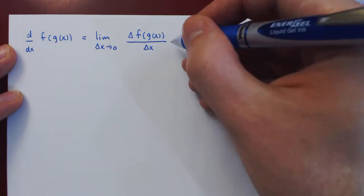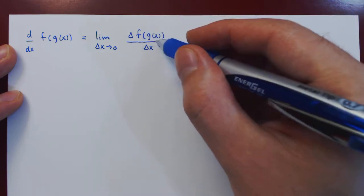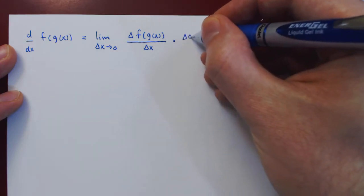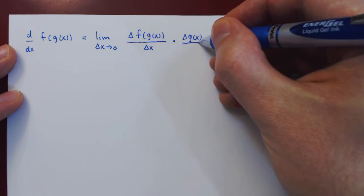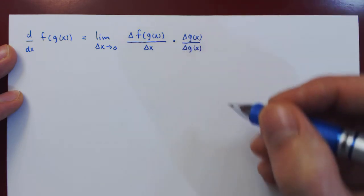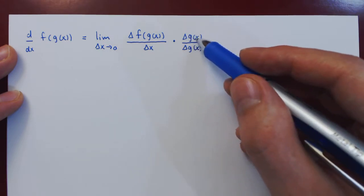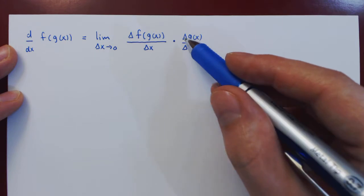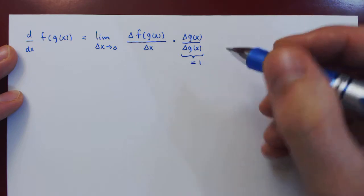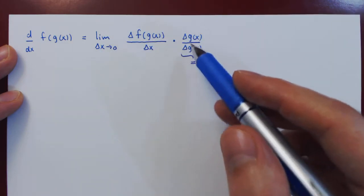So what we do is we sneak in an appropriate change, which is a change around the point g of x. So we add a change in g of x over the exact same thing, a change in g of x. So whatever that change is in the function g at the point x, if we divide by the same thing, this is just 1. So we are not changing the expression, only what it looks like.